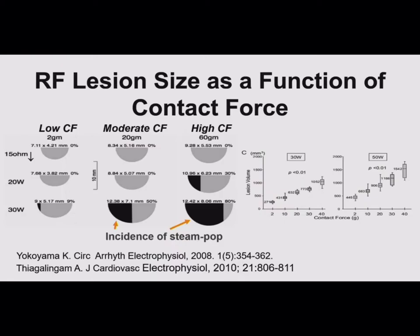Shown nicely by Hiroshi Nakagawa: at any given power, if you increase the contact force between the electrode and the tissue and you're embedding the electrode into the tissue, you'll get a larger lesion. At 2 grams versus 20 grams versus 50 to 60 grams, because you're embedding that electrode in the tissue, you're going to get a larger lesion at different powers. It's when you have both high power and high contact force that you're at the highest risk of creating steam pops.